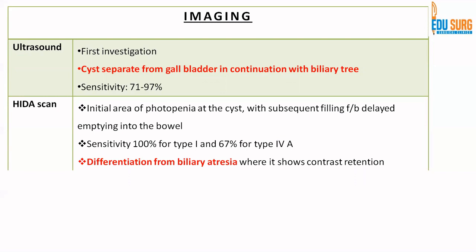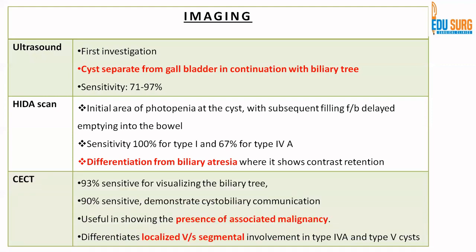HIDA scan sensitivity is 100% for Type 1 and 67% for Type 4A. The most commonly done imaging in the outpatient setting for abdominal pain is a contrast-enhanced CT scan. CT is 93% sensitive for visualizing the biliary tree and 90% sensitive to demonstrate the cystobiliary communication.